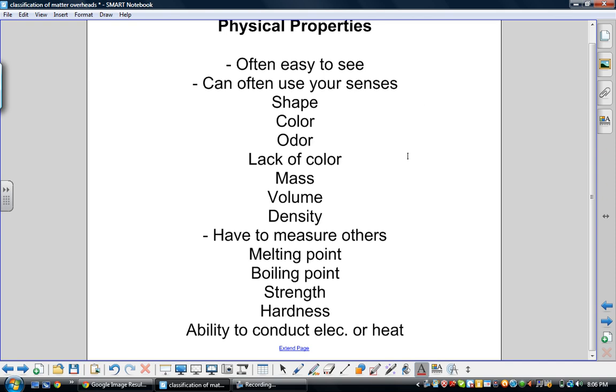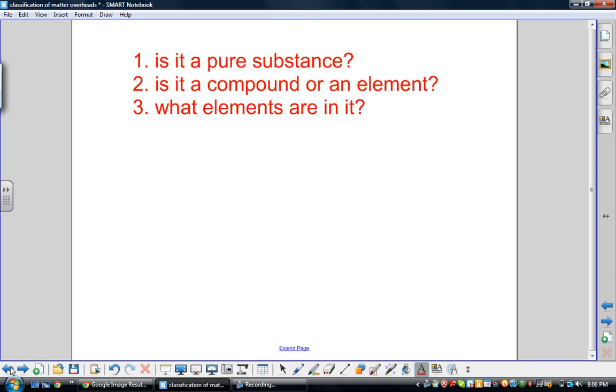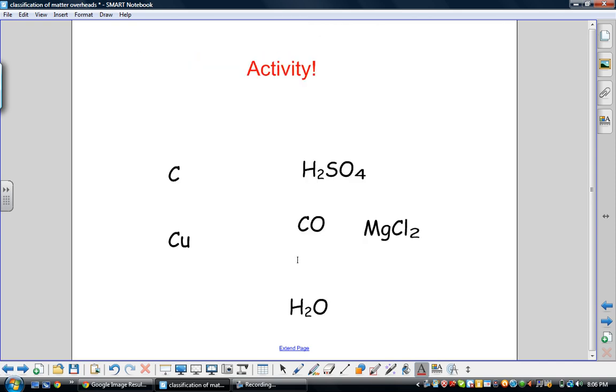What's important about these is understanding that you can test and evaluate these without changing the identity of an object. When I say identity, I mean its molecular identity. So the molecular identity of water is H2O, the molecular identity of copper is Cu, the molecular identity of magnesium chloride is MgCl2.